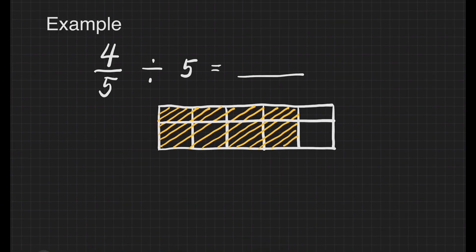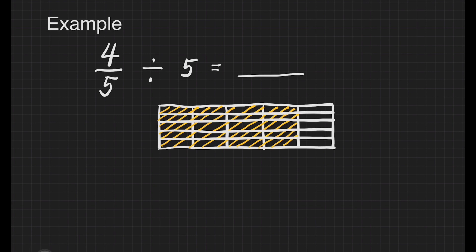Now we will divide this 4 fifths into 5 equal parts because it says there we have to divide this whole into 5 parts. If we are going to count the number of parts this whole is divided, it is now 25. Later, this will be our denominator.